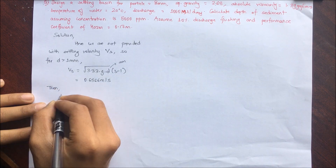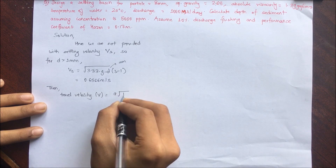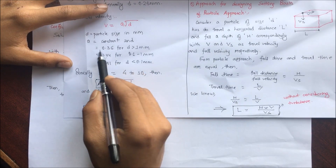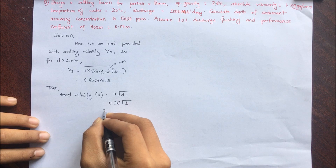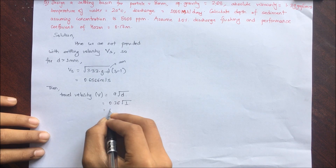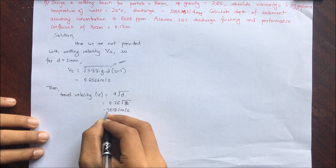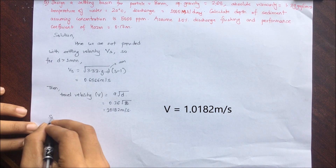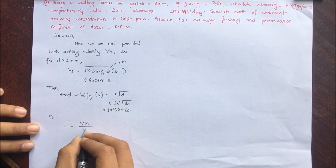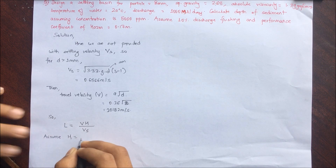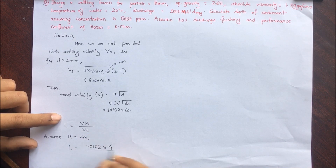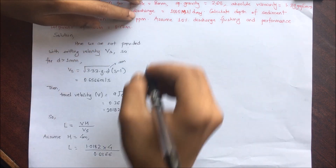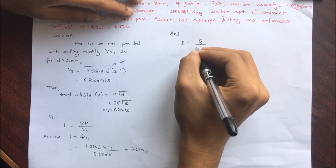Next, we determine the travel velocity v = a × √d, where a is a constant. For particle size greater than 1 mm, a = 0.36 and d = 8 mm, giving v = 1.0182 m/s. From the particle approach, length L = (v × H) / vs. Assuming H = 4 m, L = (1.0182 × 4) / 0.6566 = 6.2 m. This is the length without considering turbulence.